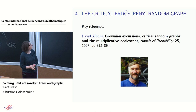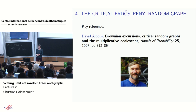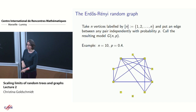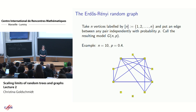I want to move on now to talk about the critical Erdős–Rényi random graph. The material in this section comes primarily from a 1997 paper of Aldous, and then I'll move on to some things I did with collaborators. Let me remind you what I mean by the Erdős–Rényi random graph.